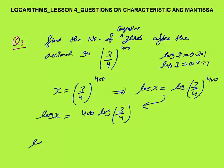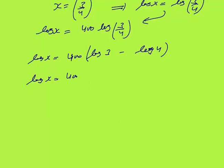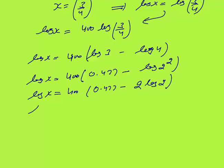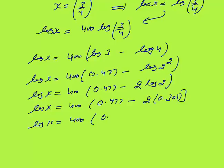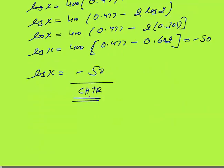Using log(a/b) = log a − log b: log x = 400·(log 3 − log 4) = 400·(0.477 − log 2²) = 400·(0.477 − 2×0.301) = 400·(0.477 − 0.602) = 400·(−0.125) = −50. So log x = −50, with characteristics = −50 and mantissa = 0.